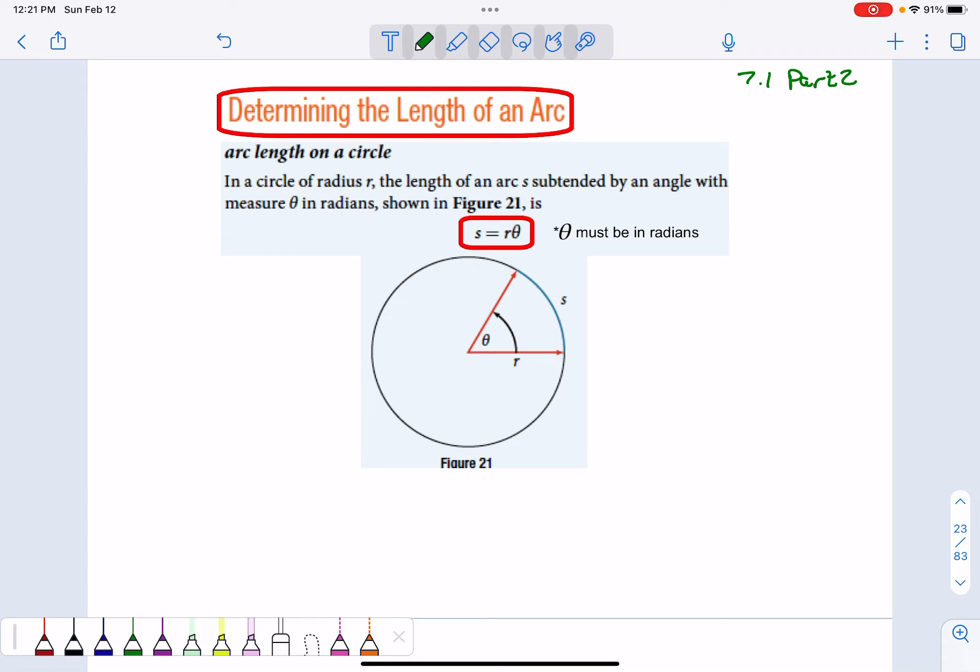If we want to calculate the arc length of a circle, we could use the formula S equals R theta that I mentioned before.